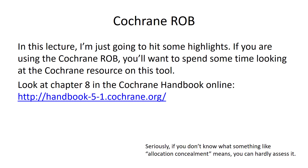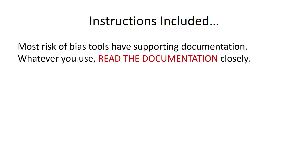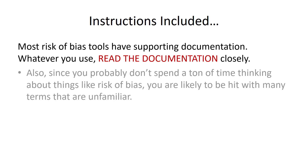For the Cochrane Risk of Bias tool, you could look at Chapter 8 in the Cochrane Handbook. Seriously, if you don't know what something like allocation concealment means, you can hardly assess it. Most risk of bias tools have supporting documentation. Whatever you use, read the documentation closely.